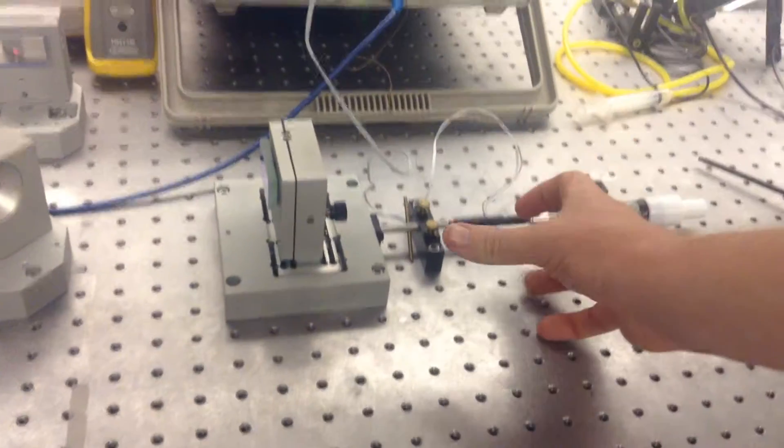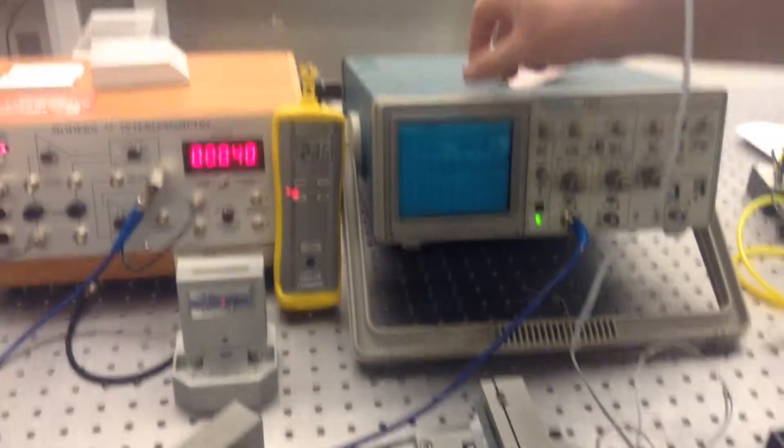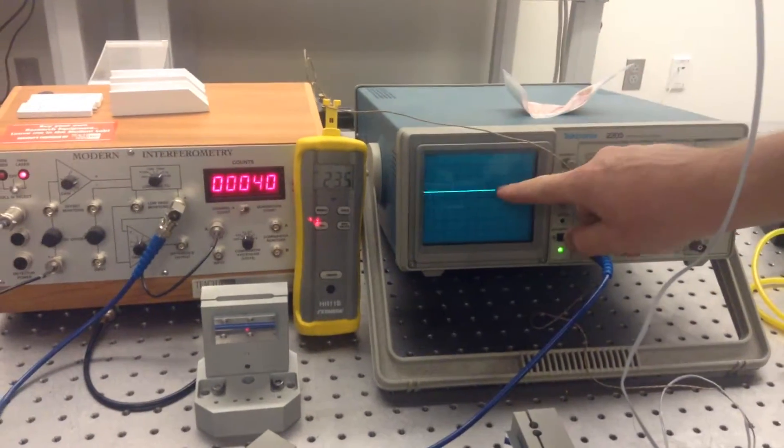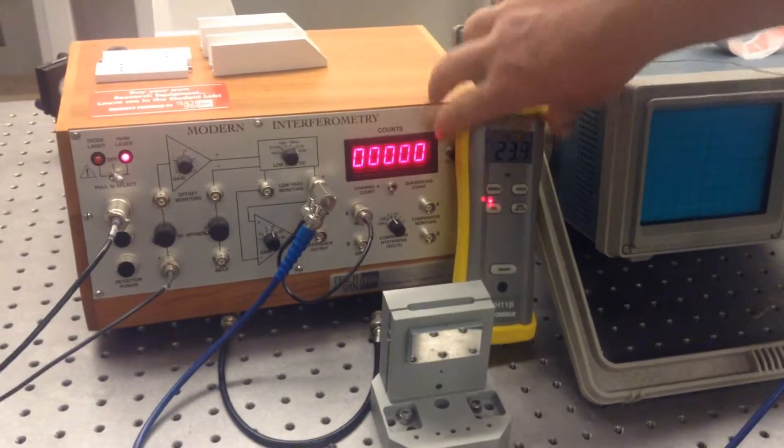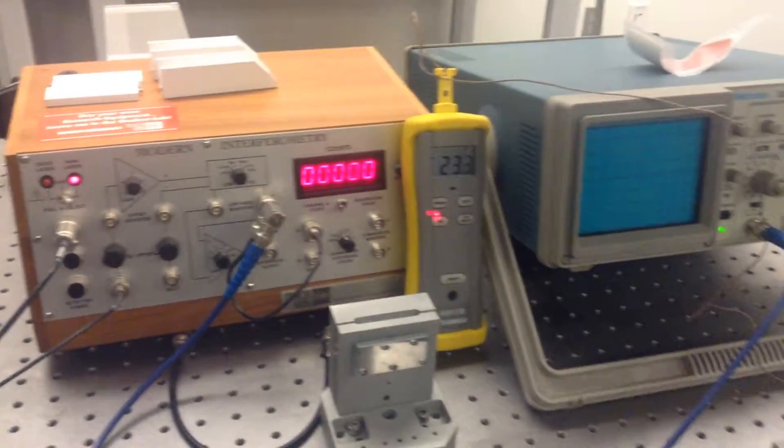If this bar changes length, we should see some kind of response here on this line. Maybe we can count fringes. I've zeroed it. So let's run a current to this bar.